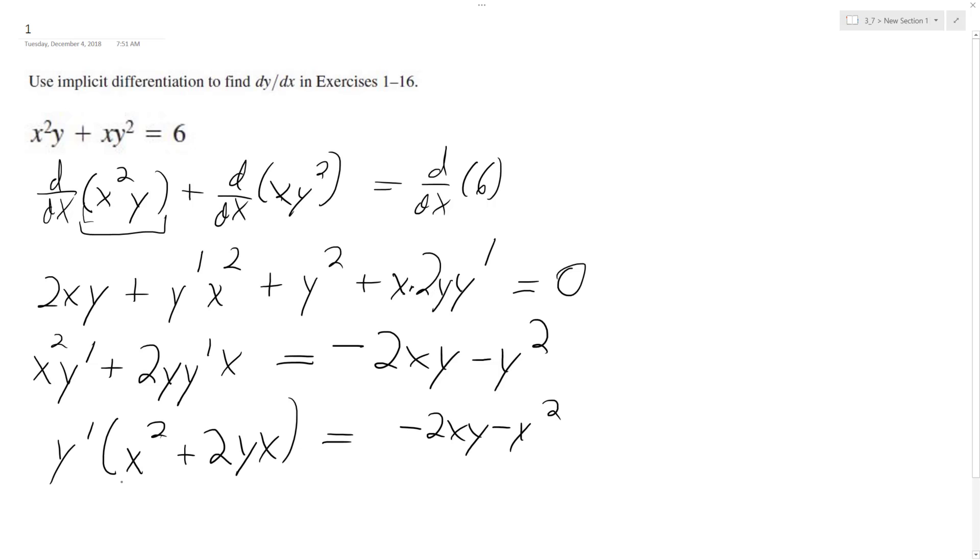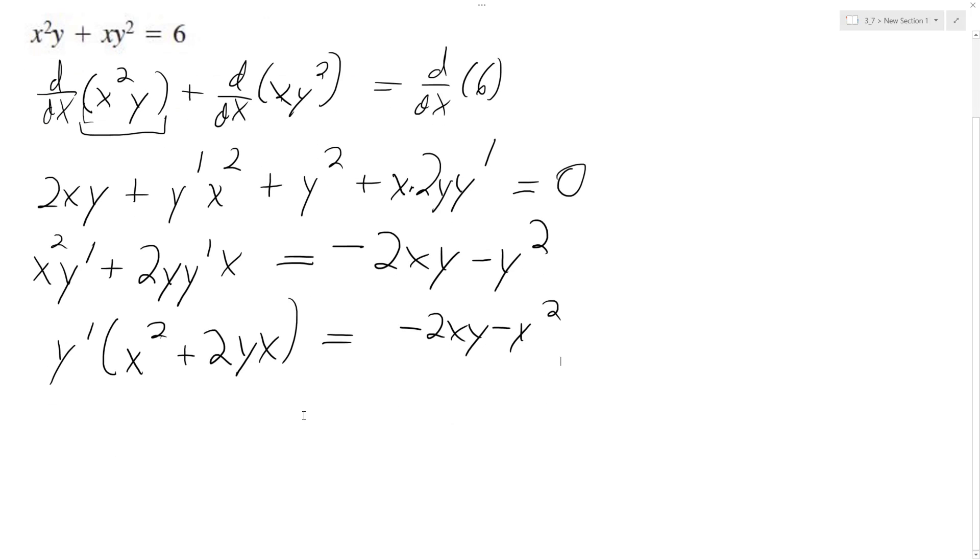Divide both sides by the x squared plus 2yx, and what we end up with is y prime is the same thing as dy/dx. We have negative 2xy minus y squared over x squared plus 2yx, and that's it.